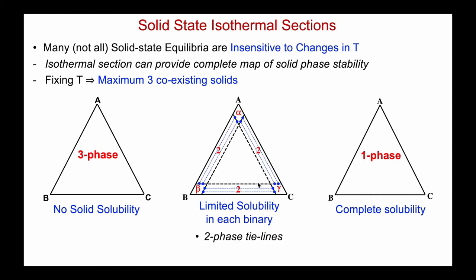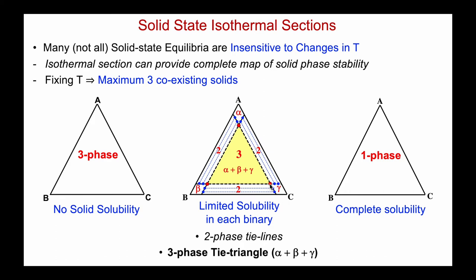In between these single-phase solid solution regions, closer to the binaries, we can have two-phase coexistence — for example between alpha and gamma — and those two phases would be joined by a tie line. Within the triangle we'll have three-phase coexistence, but in this case not of three pure solids, but of three solid solutions: alpha, beta, and gamma. To represent this three-phase equilibrium we again use the tie triangle, whose corners represent the coexisting solid solutions rather than pure phases.